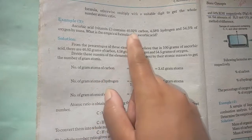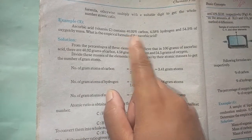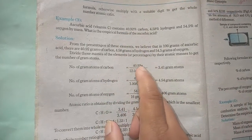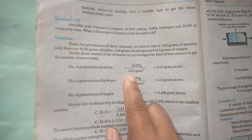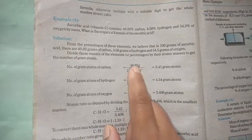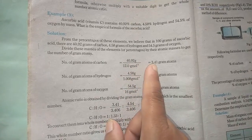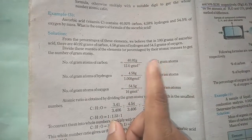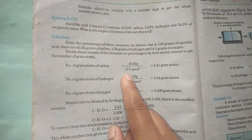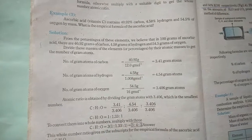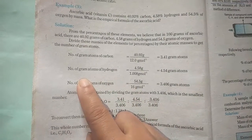For carbon, the percentage given is 40.92%. Divide this percentage by the atomic mass of carbon, which is 12. You will get 3.41 gram atoms. We have found the number of gram atoms of carbon.